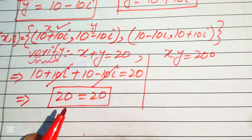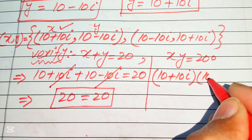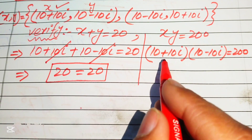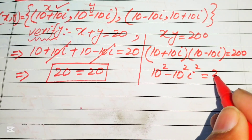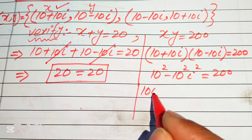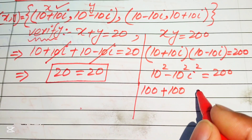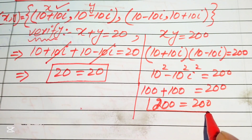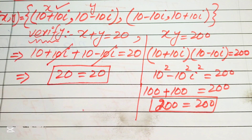Now we check the second equation. We compute x times y: (10 plus 10 iota) times (10 minus 10 iota). Applying the difference of squares formula, this equals 10 squared minus 10 squared times iota squared. Since 10 squared equals 100 and iota squared equals minus 1, we get 100 minus 100 times minus 1, which is 100 plus 100 equals 200. This confirms the second equation is satisfied. Thank you so much for watching this video, please subscribe to my channel for more exciting videos.